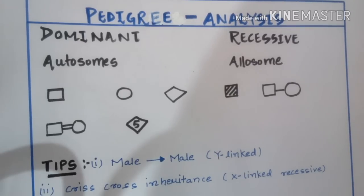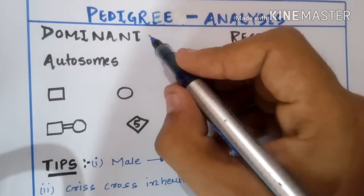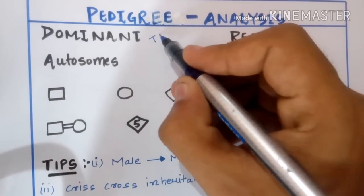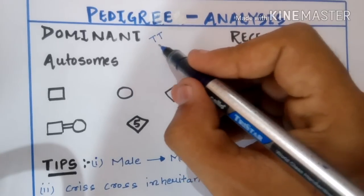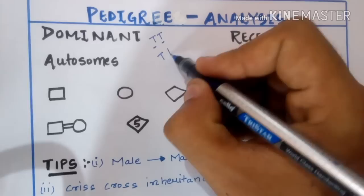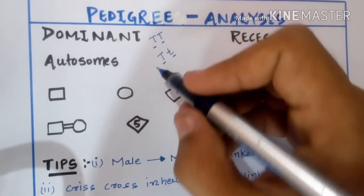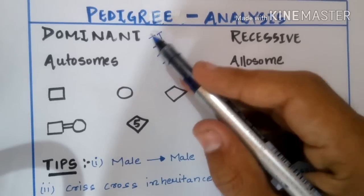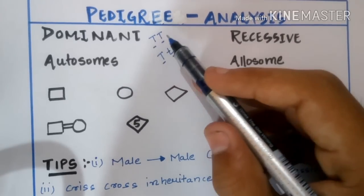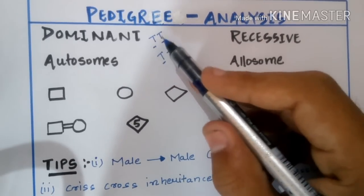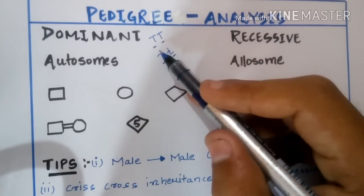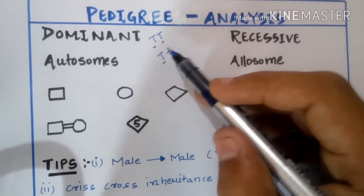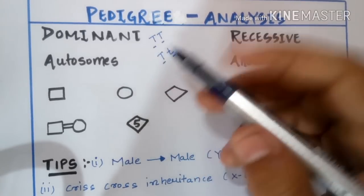First, we need to emphasize some important terms. Starting with 'dominant': taking the example of Pisum sativum, on which Mendel did all his experiments, TT is homozygous dominant — homozygous because both genes are the same — and Tt is heterozygous dominant because both genes are different. These are called dominant because the capital T expresses itself even in the presence of another gene, whether capital T or small t, so both TT and Tt will be tall.